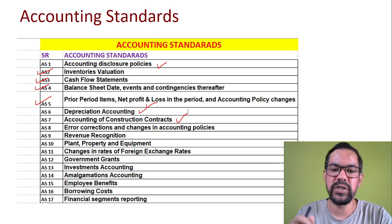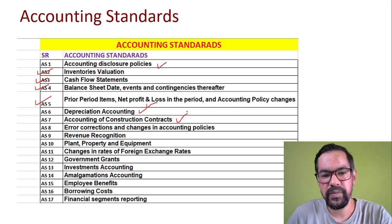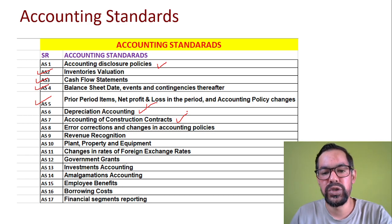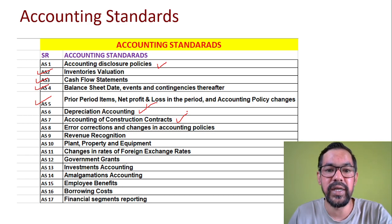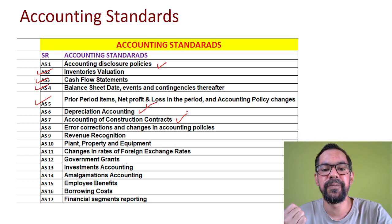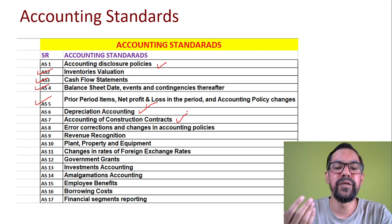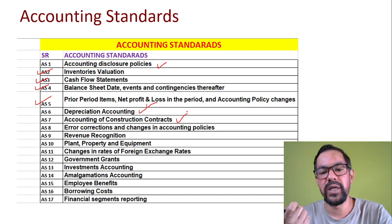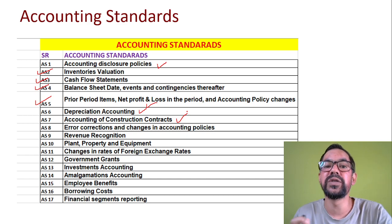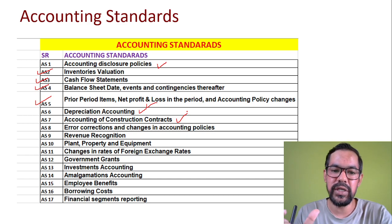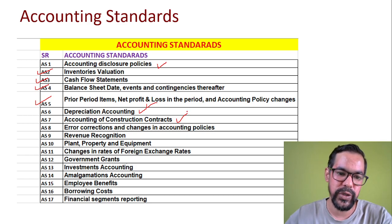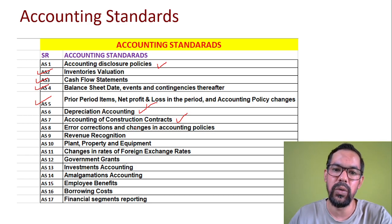Accounting Standard 7 is Accounting for Construction Contracts. This covers the amount and method used to determine the revenue recognized. It includes the type of contract — such as fixed price contract plus escalation cost, or cost plus a fixed fee. All these construction-related things are generally part of this accounting standard.